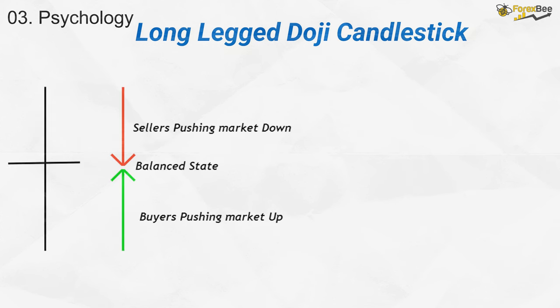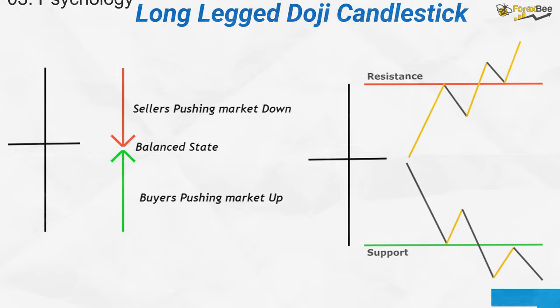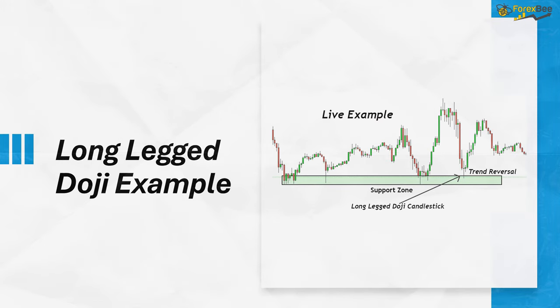The long-legged doji shows a tug of war between sellers pushing prices down and buyers pushing them up. Despite the swings, the market closes near the opening, signaling indecision. The high and low of a long-legged doji on a higher time frame can act as support and resistance levels on a lower time frame. In this picture, we can see the long-legged doji forming at a support zone, and the later breakout above its high signals a trend reversal.